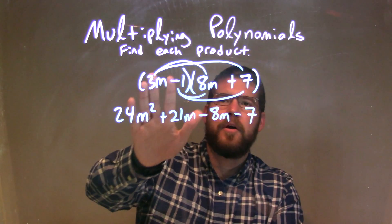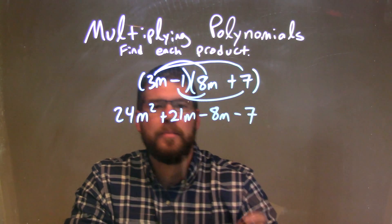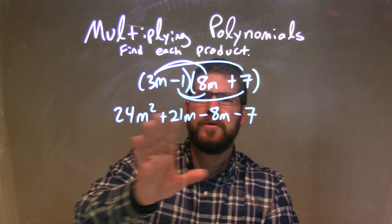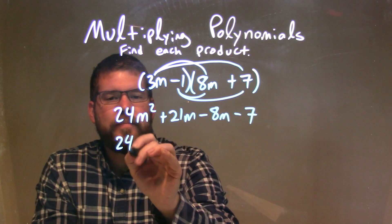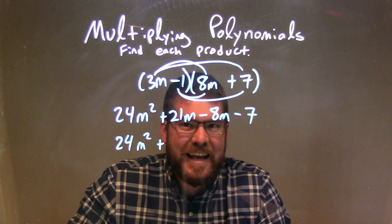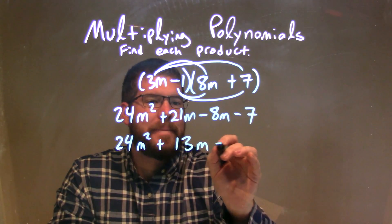So now we've multiplied all parts from one parenthesis to the other. So now we need to simplify, let's combine our like terms. Well, we have 21m and 8m, or minus 8m, are the only two ones that I see here that are like terms. So we need to combine them. So we have 24m squared plus, what's 21 minus 8, which comes out to be 13. So we have 13m minus 7.